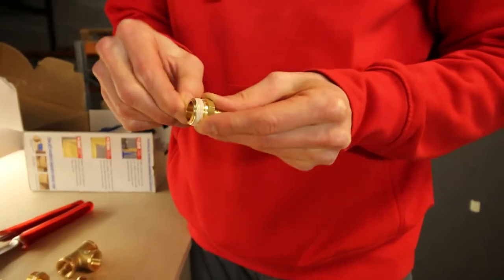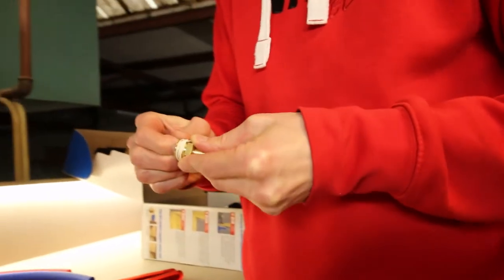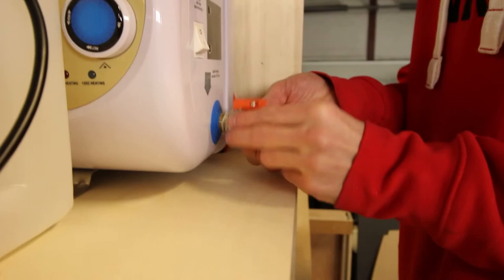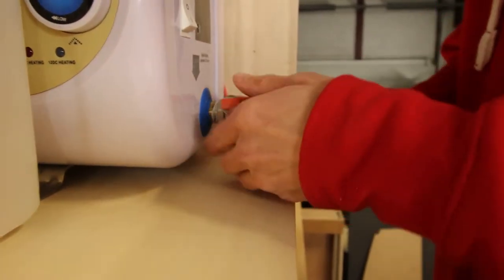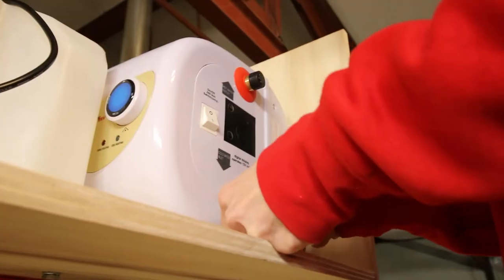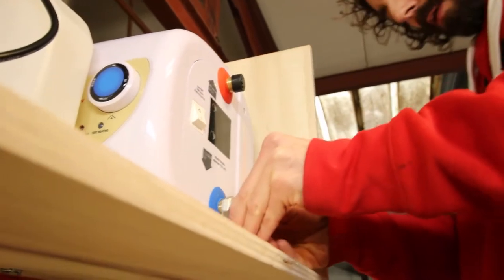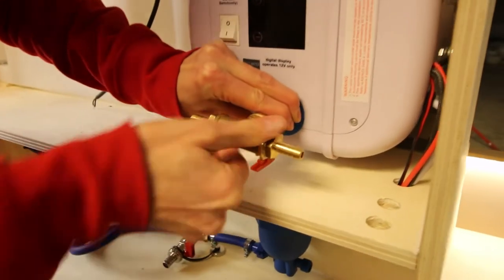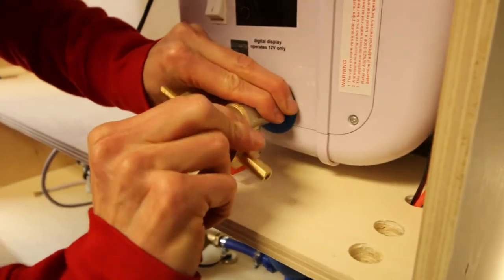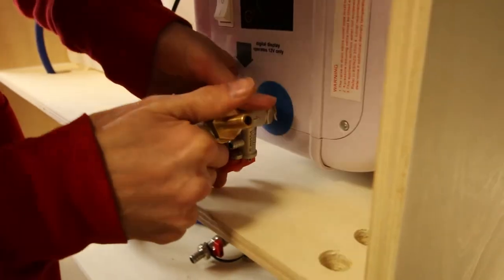The screw connections are wrapped with Loctite 55 thread sealant to make it watertight. The pressure relief valve with a non-return valve is mounted on the cold water inlet. Then the T-piece with the two hose tails is screwed onto it so that the hoses can be connected.